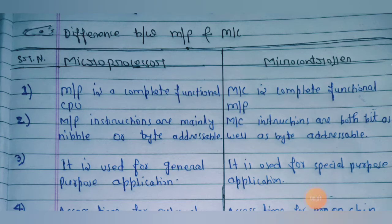Difference between microprocessor and microcontroller. Point number one: a microprocessor is a complete functional CPU, whereas a microcontroller is a complete functional microprocessor with integrated peripherals on a single chip.